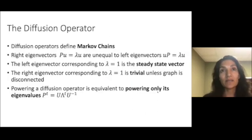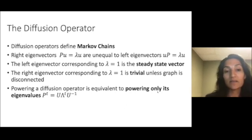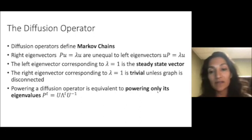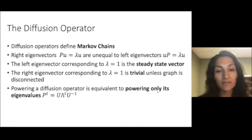The diffusion operator, as I mentioned, is a Markov chain. Markov chains are not symmetric matrices. So the right eigenvectors are different than the left eigenvectors. The left eigenvector corresponding to eigenvalue 1 is called the steady state vector.